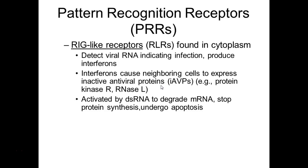Are there ways around this? Of course — we still get viral infections. Interferon doesn't handle everything, but it helps significantly. That's why you'll sometimes hear about interferon used as a drug treatment for certain viral infections — giving additional interferon helps warn cells that a virus is present and prepares them to destroy it and stop the replication cycle.